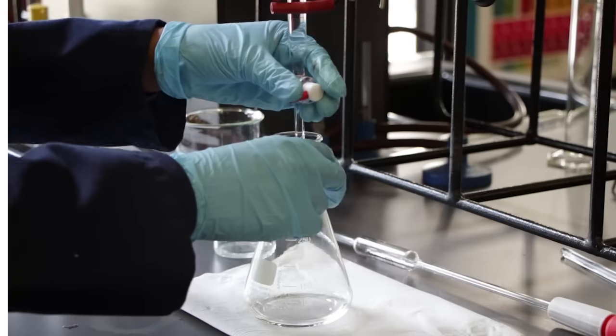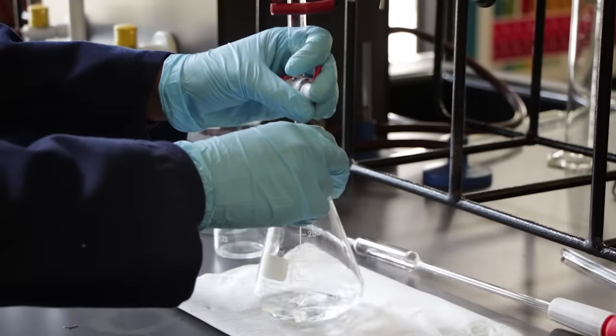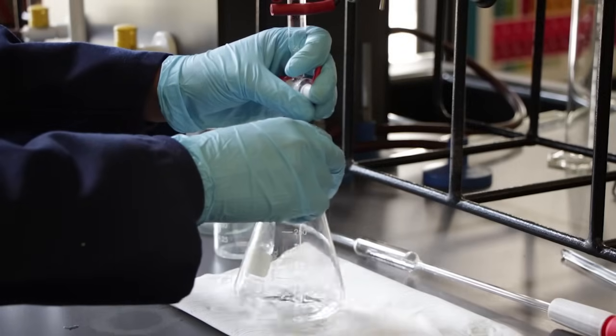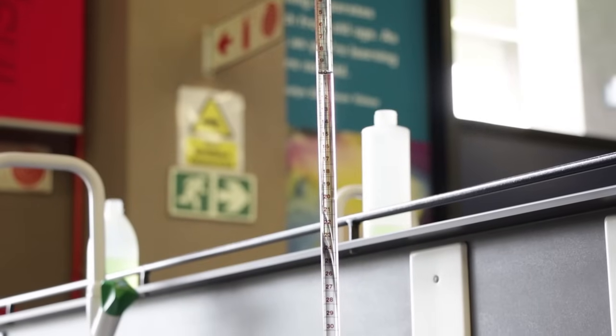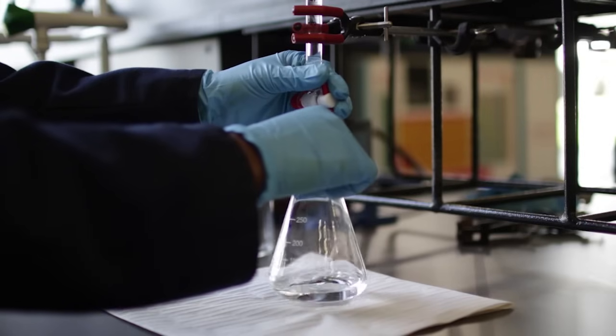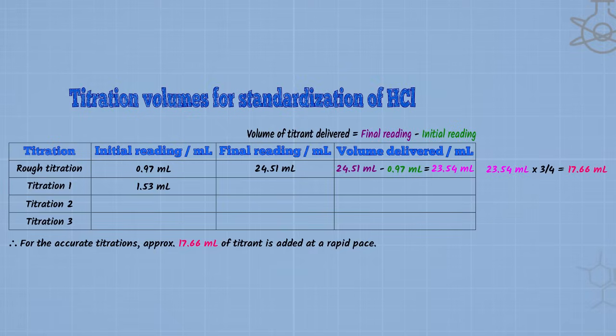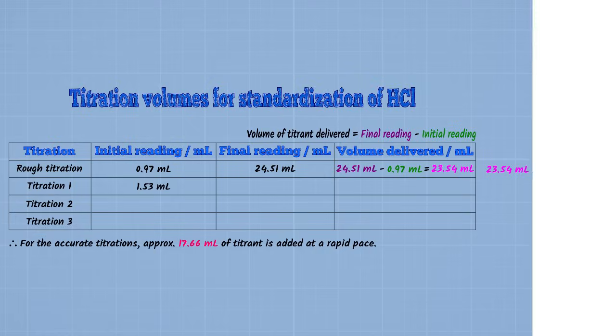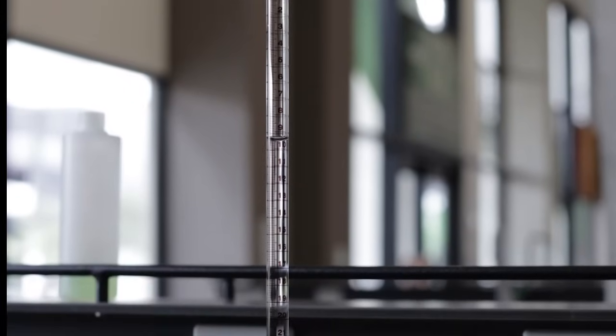The next titration will be done carefully to ensure that the endpoint is not missed using the volume recorded during the rough titration. The general procedure is to deliver approximately three quarters of the volume of titrant recorded from the rough titration at a rapid pace and then add the titrant slowly until the endpoint.